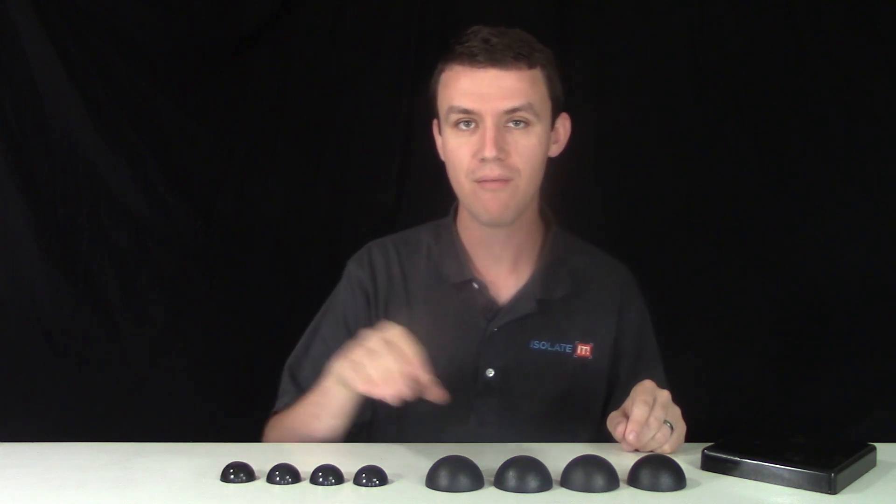In general, a different durometer allows us to tune the pad. So a smaller pad with a firmer durometer will support the same as a larger pad with a softer durometer. This allows you to find the ideal thickness, diameter, or shape of an object from our catalog to fit your project.